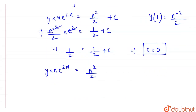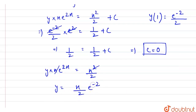Our final differential equation becomes y · x·e^(2x) = x²/2. Cancelling one x from both sides, we can write: y = (x/2) · e^(−2x). This is our final solution.